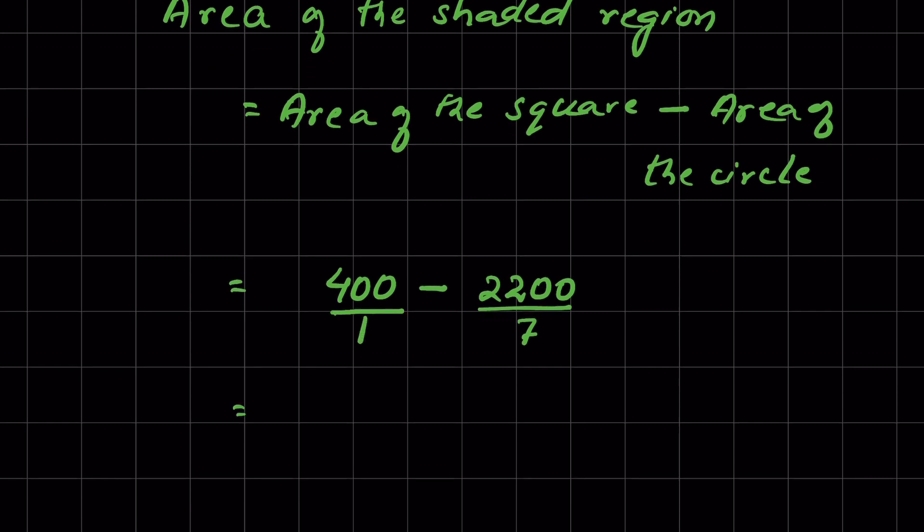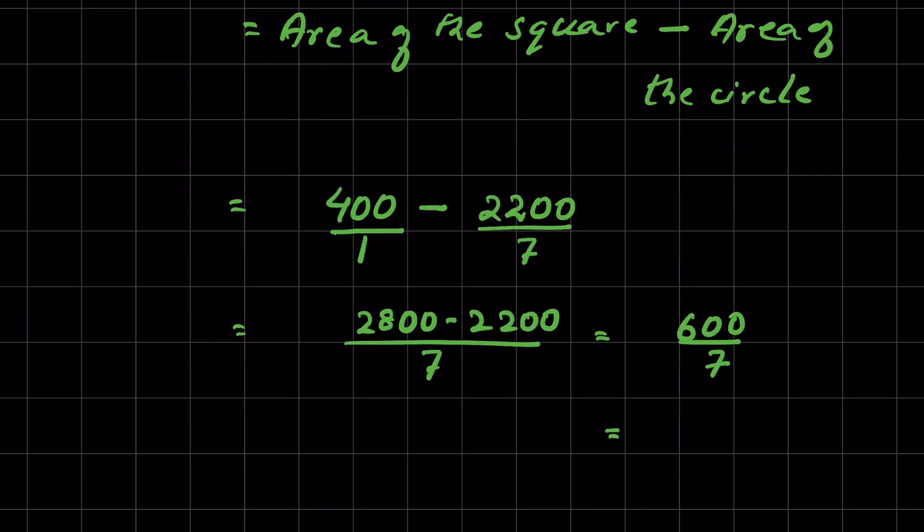Let's take out the LCM. We can put 1 in the denominator here, it's 7. So this is 2800 minus 2200 upon 7, or 600 upon 7. We can divide 600 upon 7, that will be approximately equal to 85 or 84.